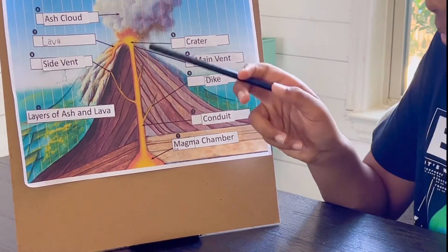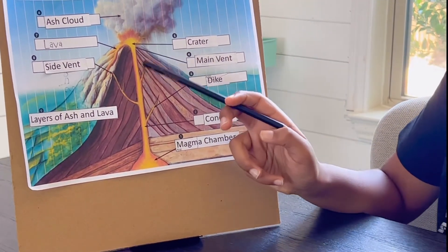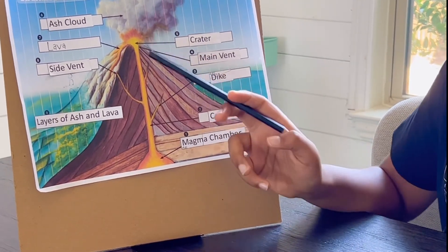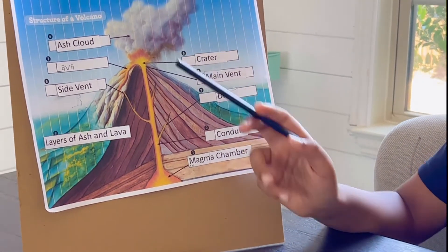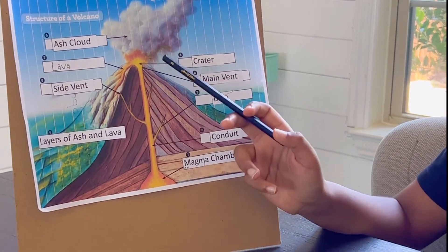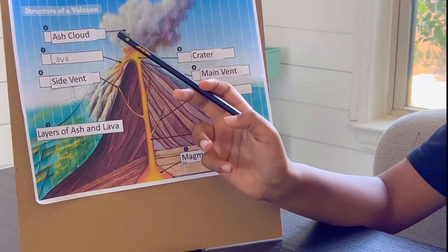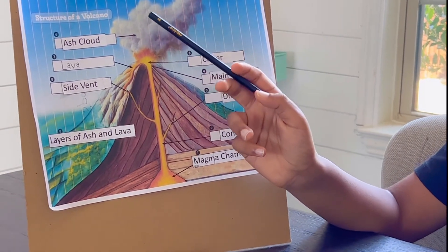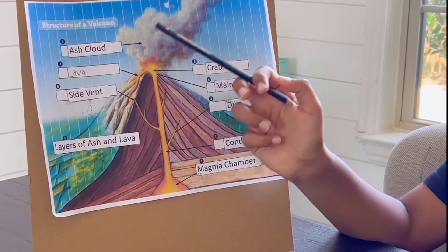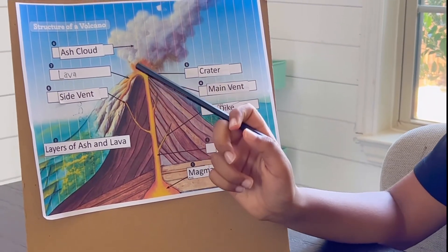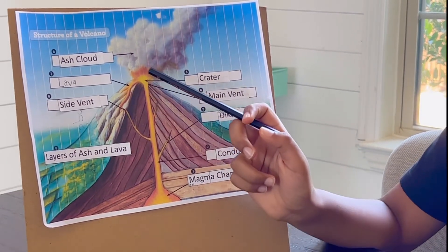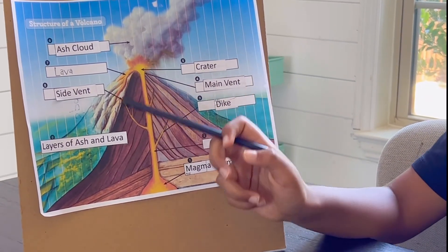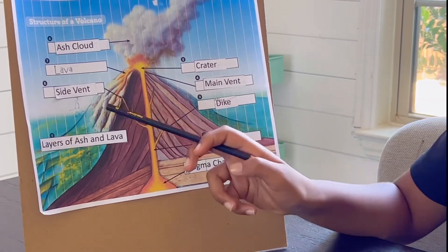The main vent is basically where the magma explodes out. A crater is the outside, the place where it surrounds the area. Next is an ash cloud. An ash cloud is the cloud where all these powerful gases and stuff are released out into the atmosphere. Next is lava, a substance that comes out of the volcano.